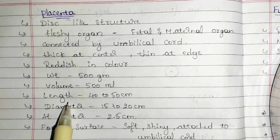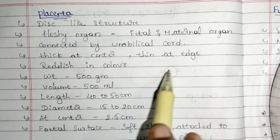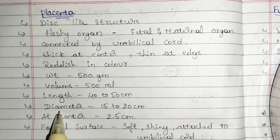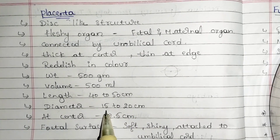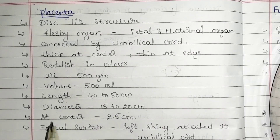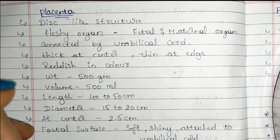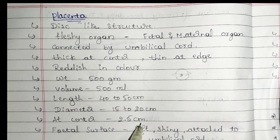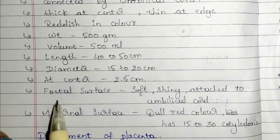The length of the umbilical cord is around 40 to 50 centimeters. The diameter of the placenta is around 15 to 20 centimeters, and the thickness at the center is around 2.5 centimeters.